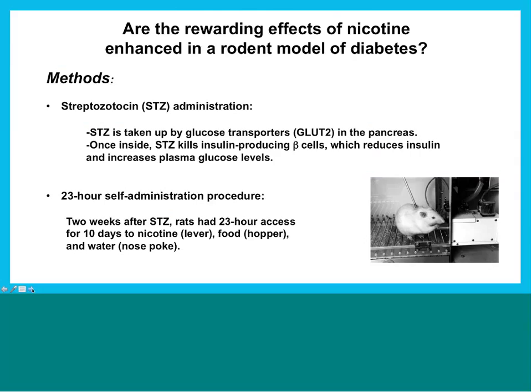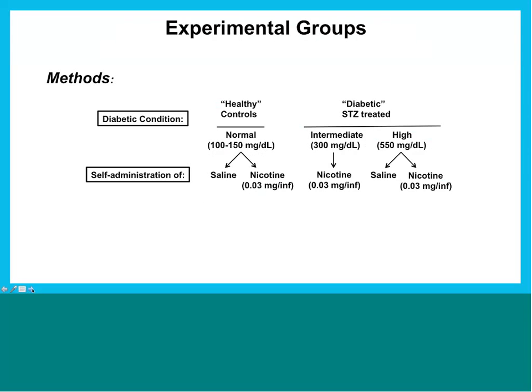We treated rats with streptozotocin, and some days later placed the animals in an extended-access nicotine self-administration paradigm — in the self-administration boxes for 23 hours a day, lever-pressing for nicotine. We had control animals without streptozotocin (healthy, normal blood glucose) in either a saline or nicotine self-administration condition, and diabetic animals with either intermediate or very high blood glucose levels — approximately 300 or upwards of 500 milligrams per deciliter.